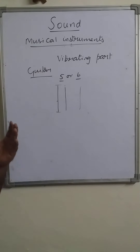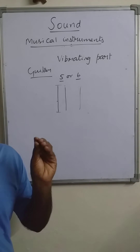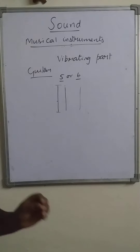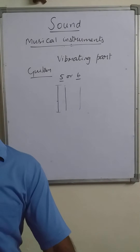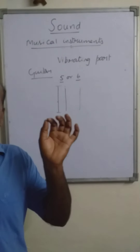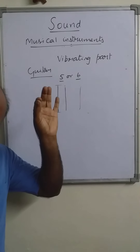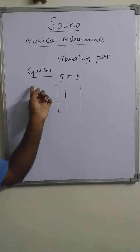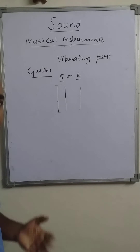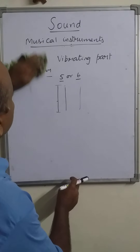In this way, sound is produced by all instruments, and all instruments produce different kinds of sound. These are only examples of different kinds of musical instruments. Now, sound is produced due to the vibration of particles — vibration of a material or vibration of an object. In a guitar, the string is vibrating, and we have to discuss more about this vibration.